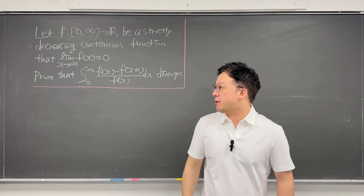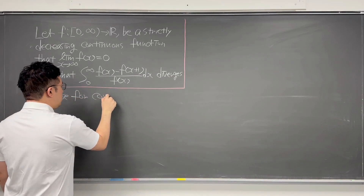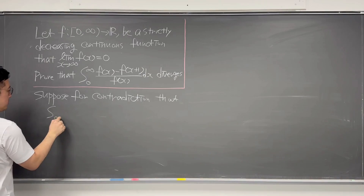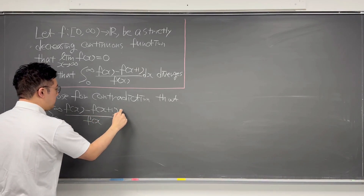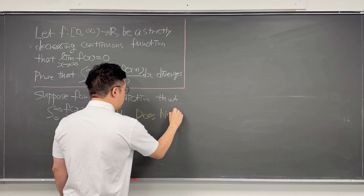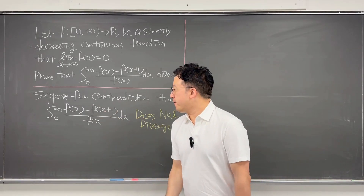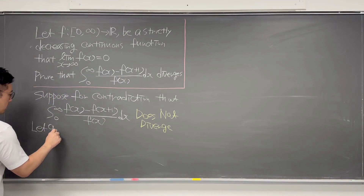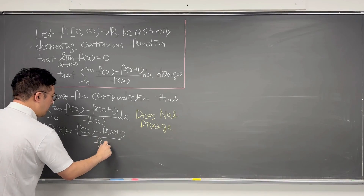So for this question, let me use contradiction. Suppose for contradiction that this integral from 0 to infinity of (f(x) minus f(x+1)) over f(x) dx does not diverge. Then let me call this integrand g(x), so let g(x) equal (f(x) minus f(x+1)) over f(x).